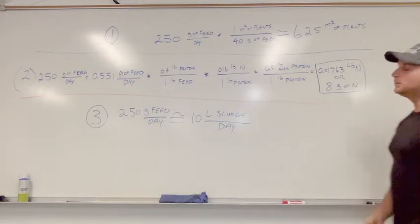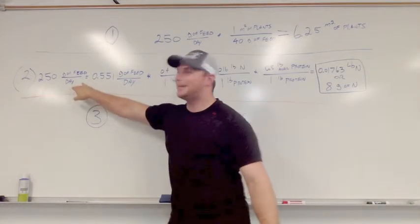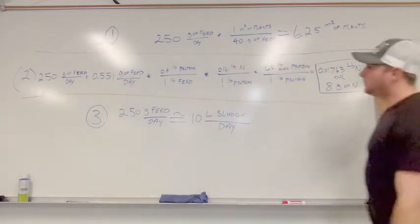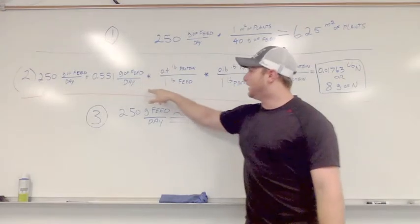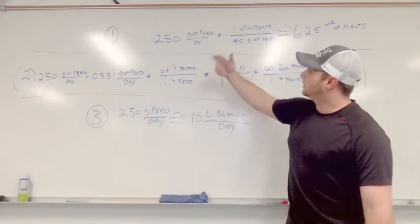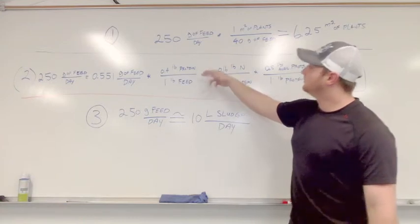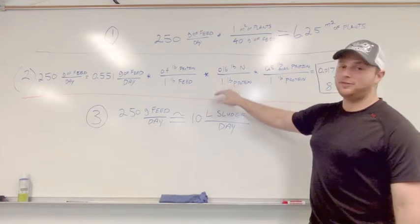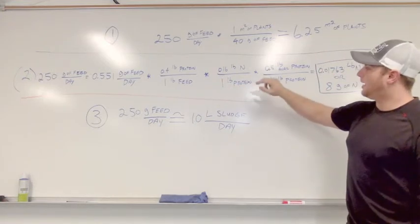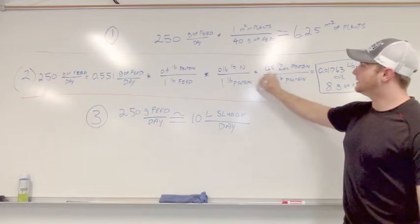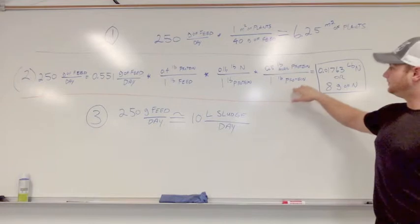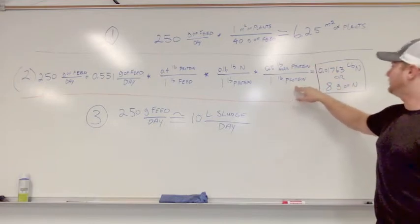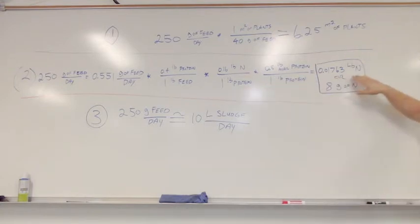In equation two, we take that same 250 grams of feed per day and convert it to total nitrogen. We first convert grams of feed to pounds of feed per day. With this high-protein feed, we have 0.4 pounds of protein per pound of feed. For every pound of protein, 0.16 pounds of nitrogen can be extracted, and only half of that becomes available nitrogen for the fish. After working out this equation, we get 0.0173 pounds of nitrogen, or 8 grams of nitrogen.